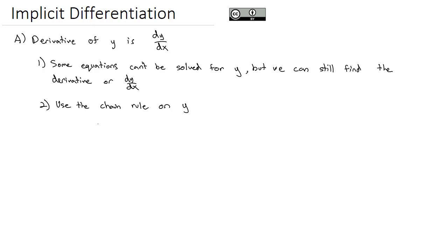So for example, if I have x squared plus 1 over y equals e to the 3x minus y squared, this is not going to be easy to solve for y. But we can still take the derivative using implicit differentiation.